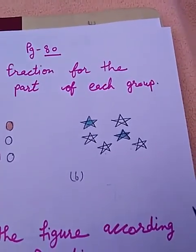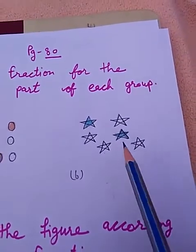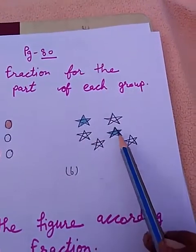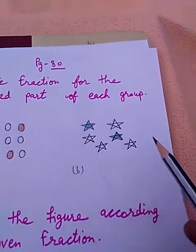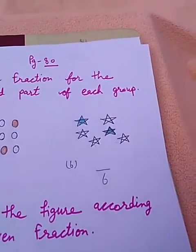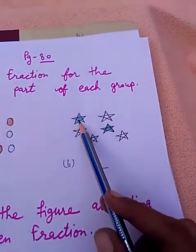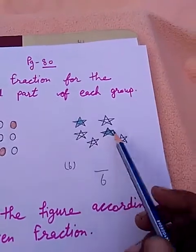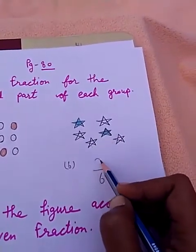Now Part B. Count total, how many total parts are there? 1, 2, 3, 4, 5, 6. Total parts are 6, so we will write 6 in the denominator. Now count how many shaded parts are there? Two. So we will write 2 in the numerator.